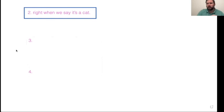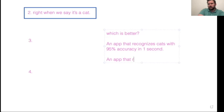But from a practical perspective, there are other metrics that we need to look at and other objectives that we need to look at. And we have to consider trade-offs. This is no free lunch. So for instance, if you're an app designer, which is better? An app that recognizes cats with 95% accuracy in one second, typically, or an app that recognizes cats 99% accuracy, but takes about 15 minutes.